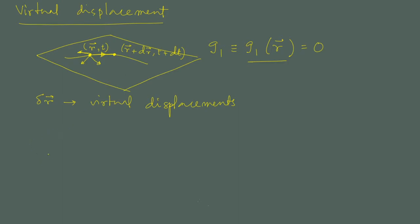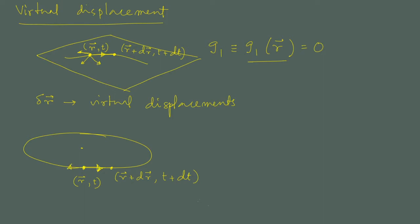Let's suppose another case where a particle is moving on a circle. We can have the particle at position R at time t, and at a later time R plus dR at time t plus dt — that displacement is a real displacement. But a virtual displacement from a given point could be along this direction or along this direction; it could be along the real displacement or in the opposite direction. It does not have to be along the real displacement, but it must be on the circle.